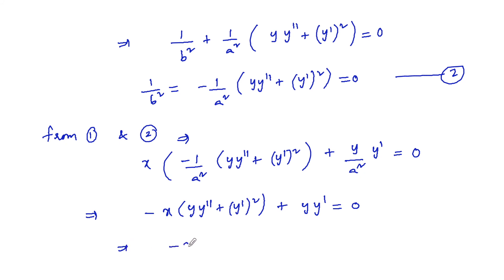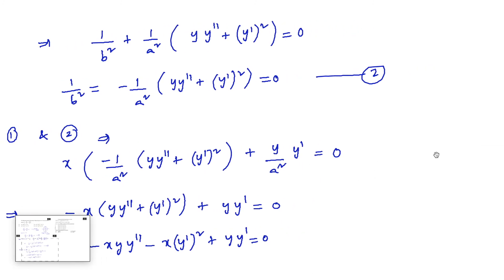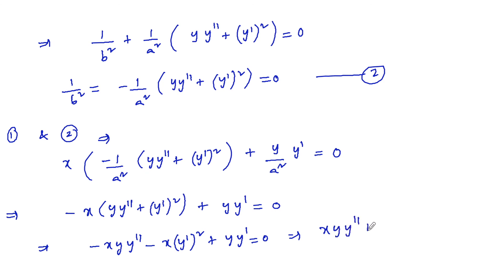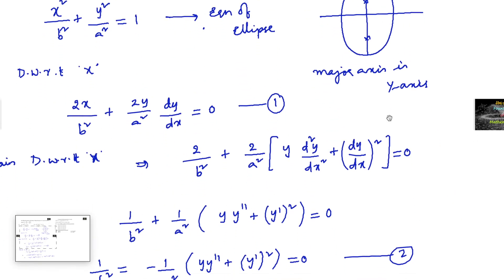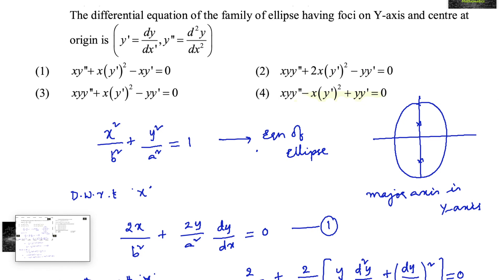This simplifies to −xy·y″ − x(y′)² + y·y′ = 0, or equivalently xy·y″ + x(y′)² − y·y′ = 0. This is the required differential equation, which corresponds to option 3.